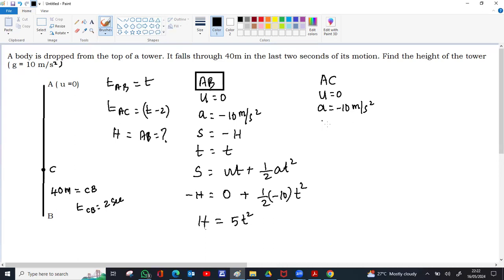The displacement here, total displacement is H, this is 40, so remaining will be H minus 40. But it's downward so it will be minus of H minus 40. Everything downward is negative.